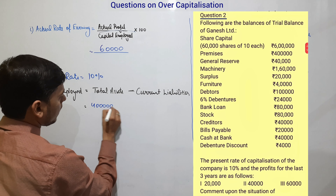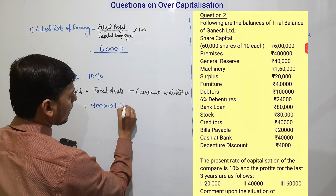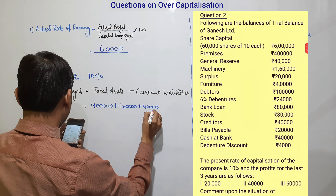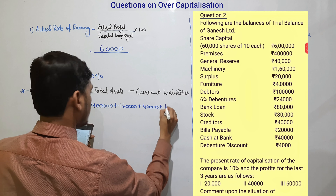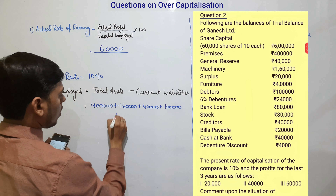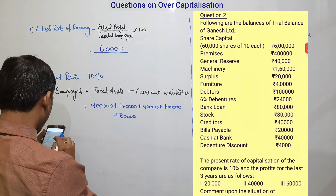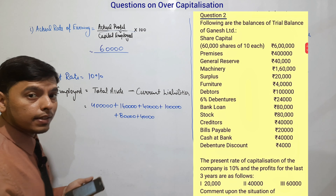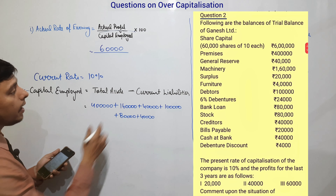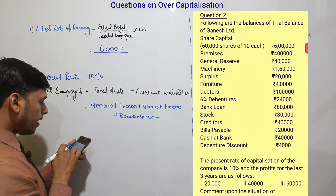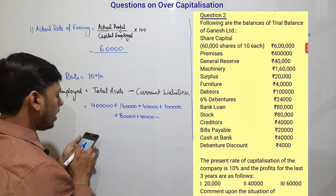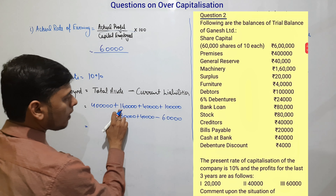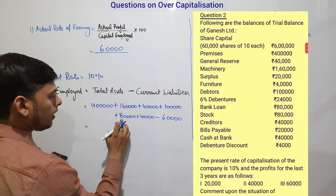Now we calculate capital employed. The formula is: total assets minus current liabilities. Total assets include: premises four lakh rupees, machinery one lakh sixty thousand, furniture forty thousand, debtors one lakh, stock eighty thousand, and cash at bank forty thousand. Debenture discount is a fictitious asset and is excluded. Current liabilities are creditors forty thousand and bills payable twenty thousand, totaling sixty thousand.